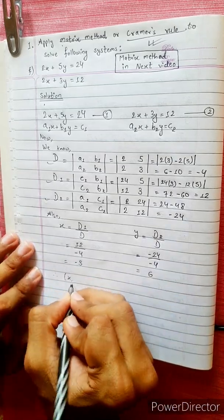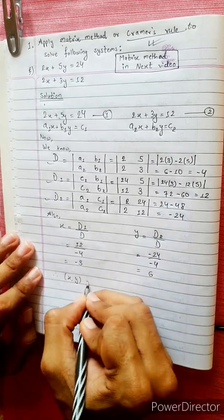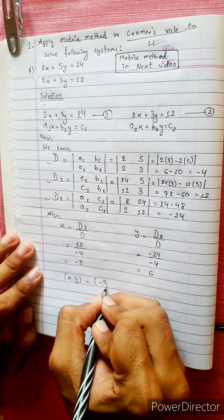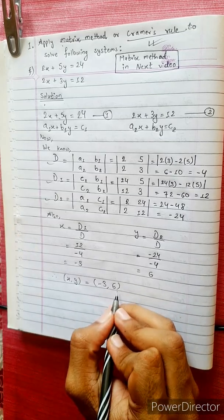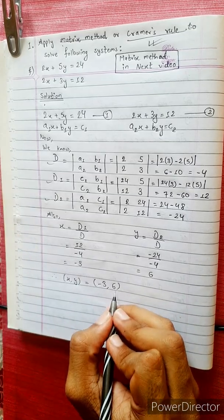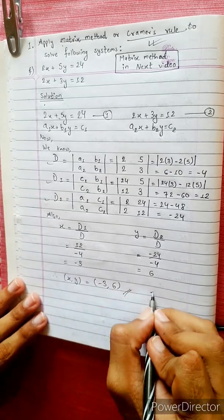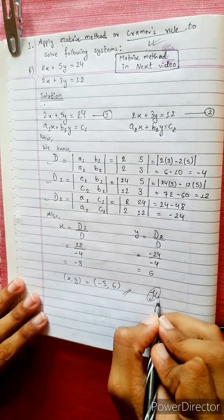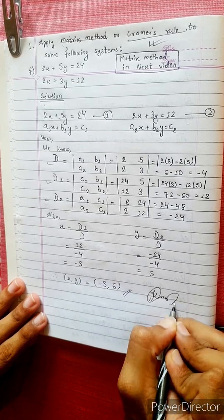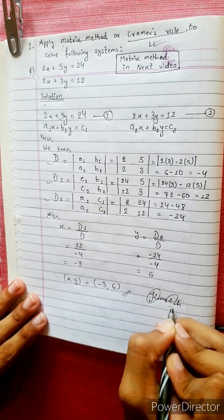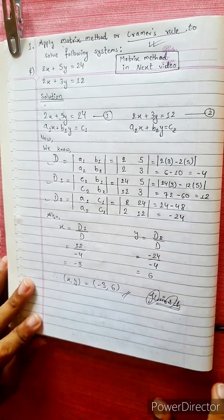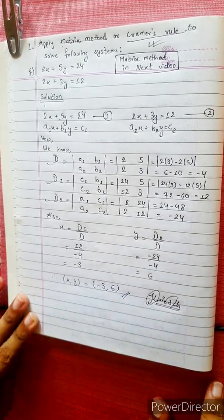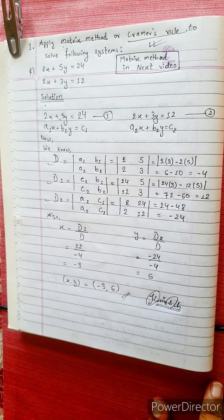Therefore, x equals D1 divided by D equals 60 divided by negative 4, which equals negative 15. And y equals D2 divided by D equals negative 24 divided by negative 4, which equals 6. That's the solution — thank you.